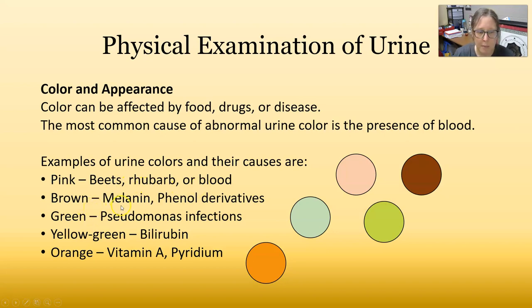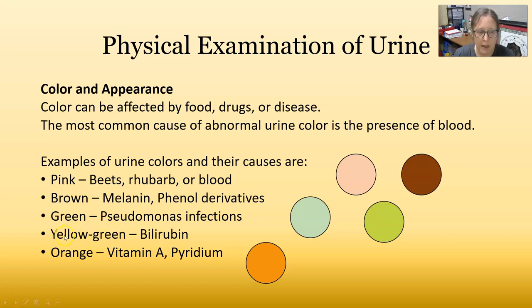Brown color could be melanin, phenol derivatives, or fecal contamination. Green could be a Pseudomonas infection, but also some medications will turn urine a blue or blue-green color. A yellow-green color could be bilirubin — it almost looks like there's a dye in there, and it kind of sticks to the edge of the cup. Once you've seen the yellow-green from bilirubin, you won't forget what it looks like.